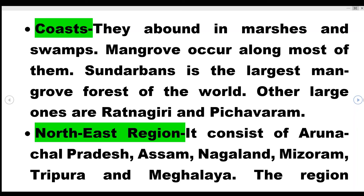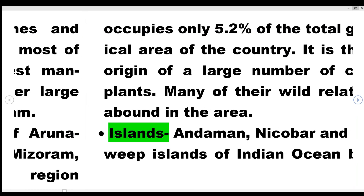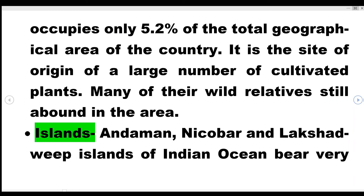The Northeast region consists of Arunachal Pradesh, Assam, Nagaland, Mizoram, Tripura, and Meghalaya. The region occupies only 5.2% of the total geographical area of the country. It is a site of origin of a large number of cultivated plants, and many of their wild relatives still abound in the area.